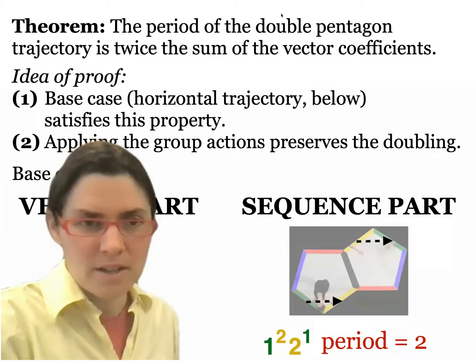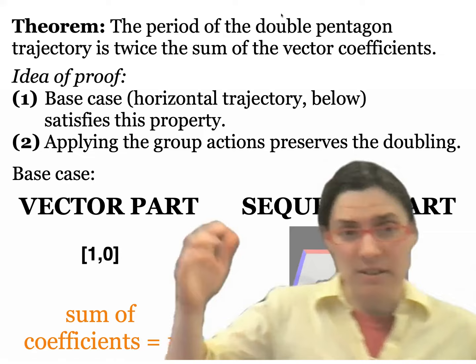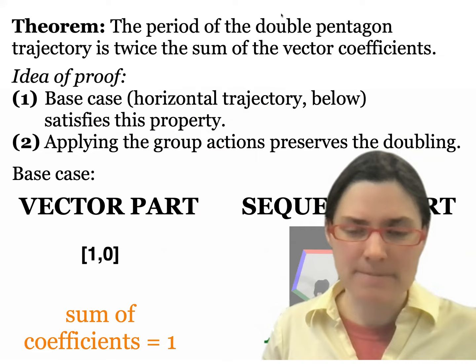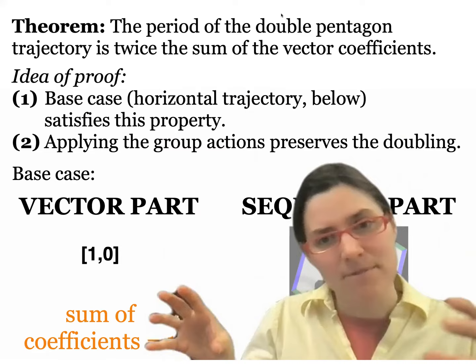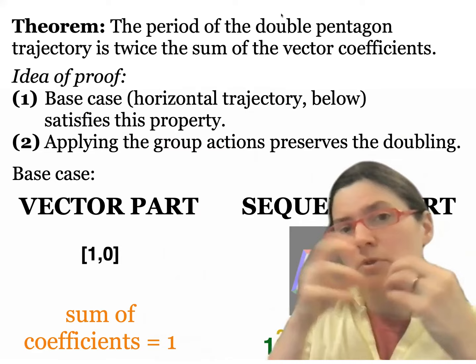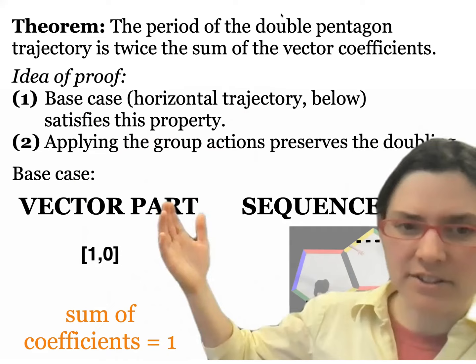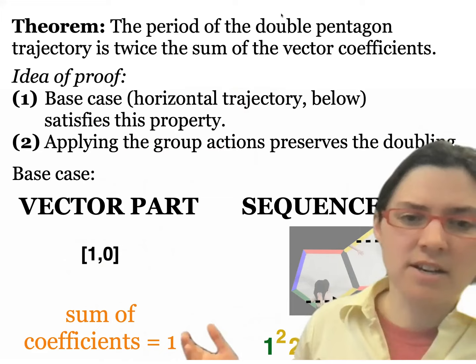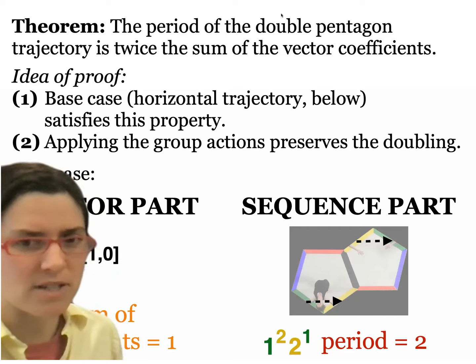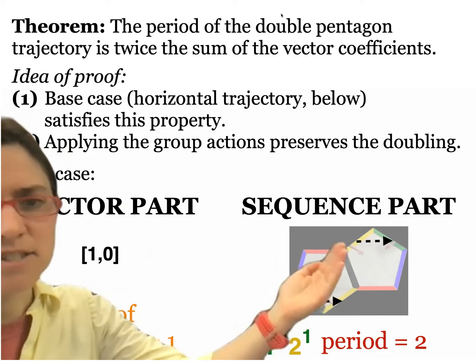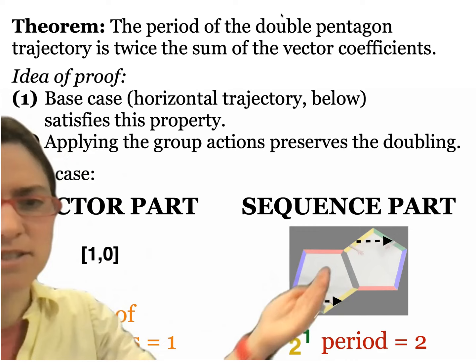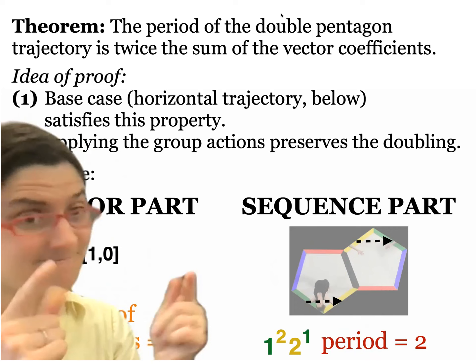I'll give a short sketch of how the theorem goes. It's a proof by induction, which makes sense because it's a tree. We prove the base case and then prove that when you apply the transformations, the relationship continues to hold. For the base case, the horizontal trajectory has vector (1,0), and the sum of coefficients is 1. A horizontal trajectory on the double pentagon surface goes from the yellow edge to the green edge and back — it hits two edges, so the period is 2. Two is twice 1. So far, so good.